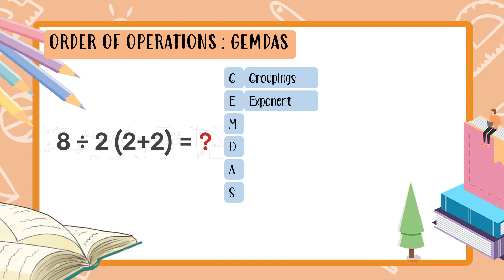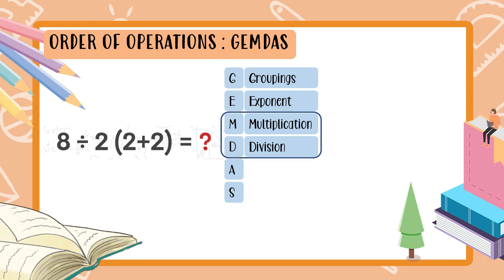Next we have M and D, which stand for Multiplication and Division. These two are partners — they are done together, whichever comes first from the left side. If division appears first on the left, you do division before multiplication.